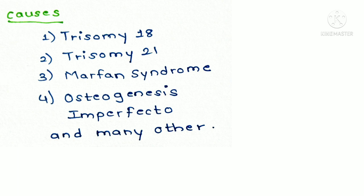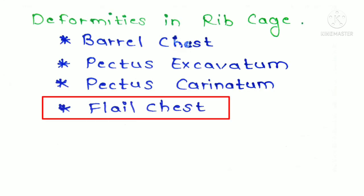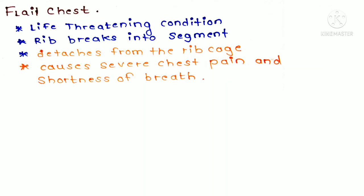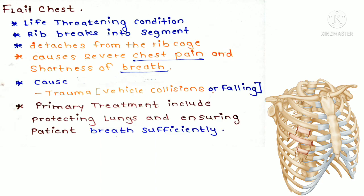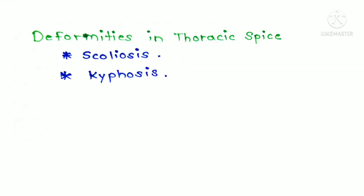The next deformity is flail chest, a life-threatening medical condition in which two or more adjacent ribs break into segments and detach from the ribcage, causing immense chest pain and shortness of breath. Primary treatment includes protecting the lungs and ensuring the patient is breathing sufficiently. The cause of flail chest is trauma, such as vehicular collision or falling on the chest.